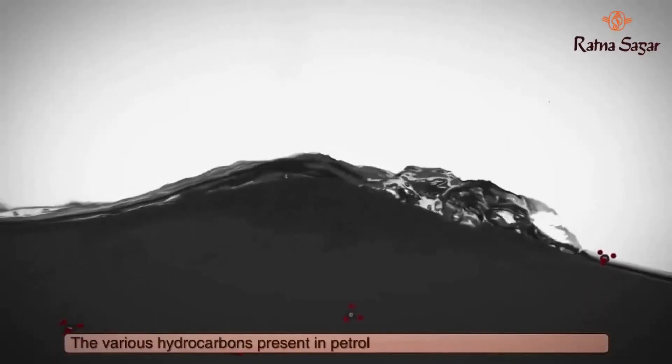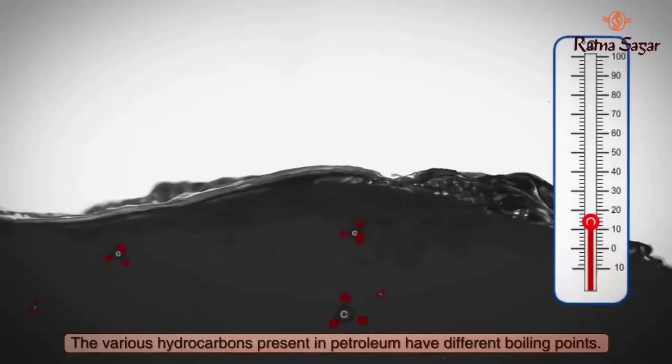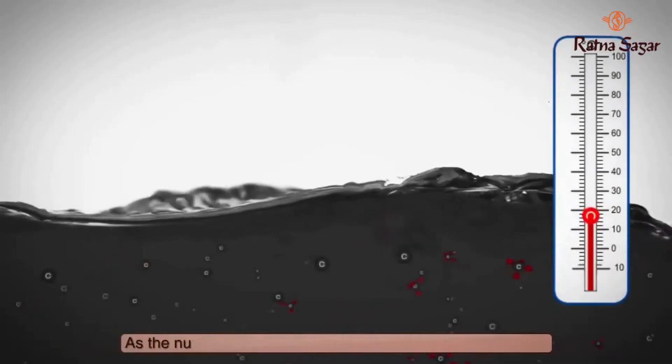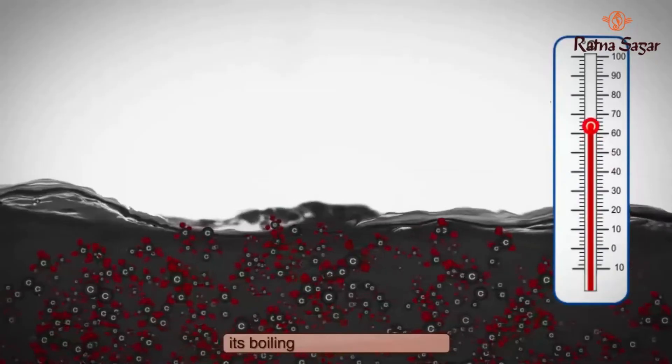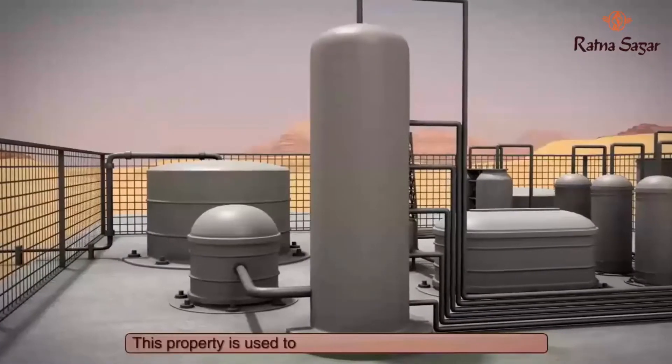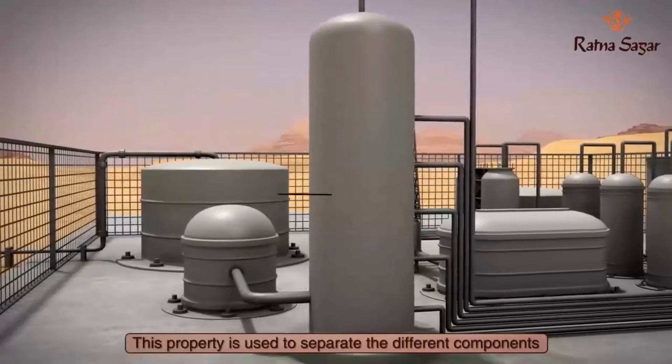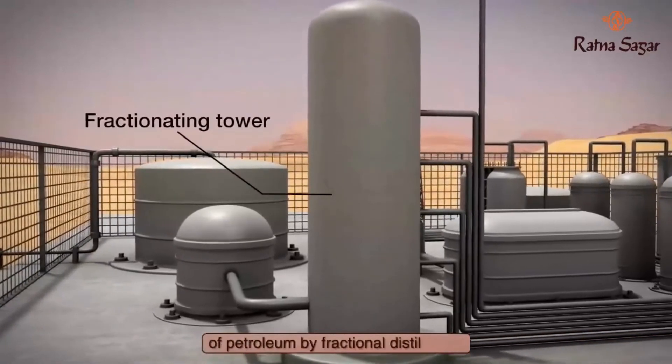The various hydrocarbons present in petroleum have different boiling points. As the number of carbon atoms in a hydrocarbon increases, its boiling point also increases. This property is used to separate the different components of petroleum by fractional distillation.